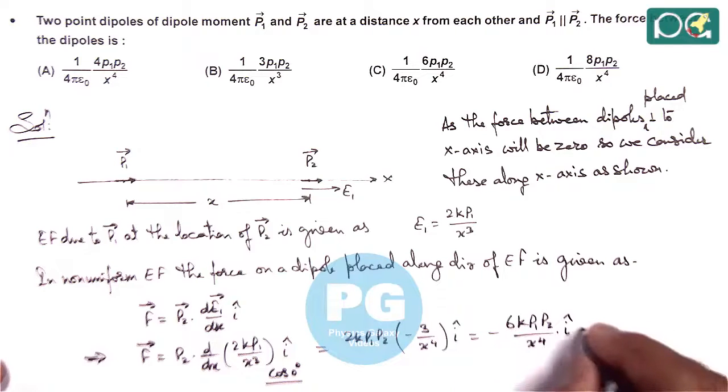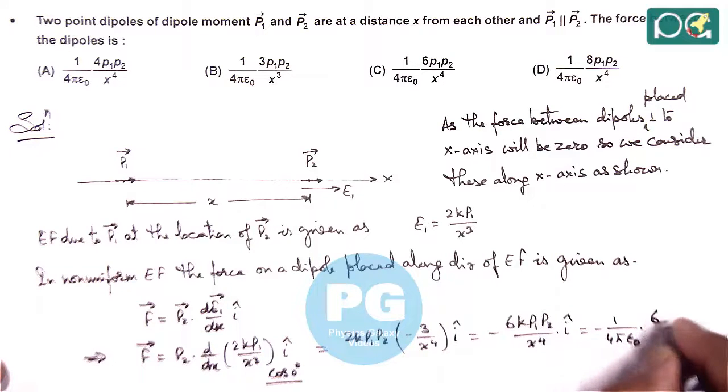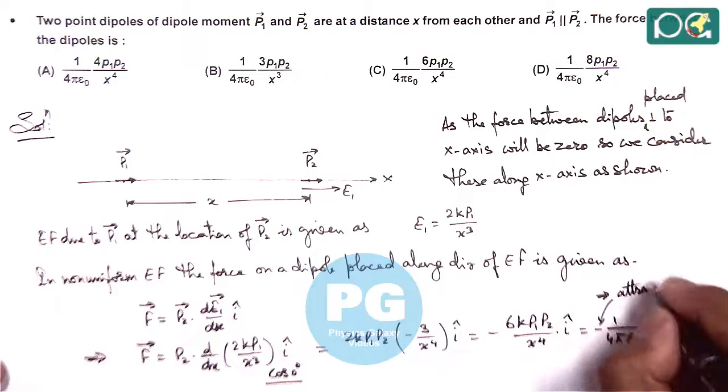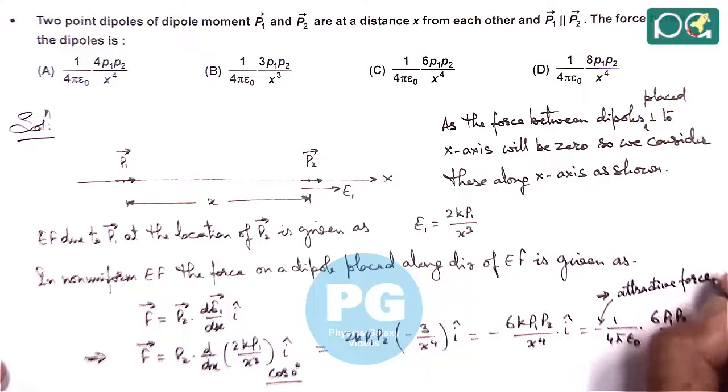K we can write as 1 by 4π epsilon not. So this is minus 1 by 4π epsilon not times 6p1p2 by x to power 4 i cap. Here negative sign indicates attractive force, this implies attractive force.